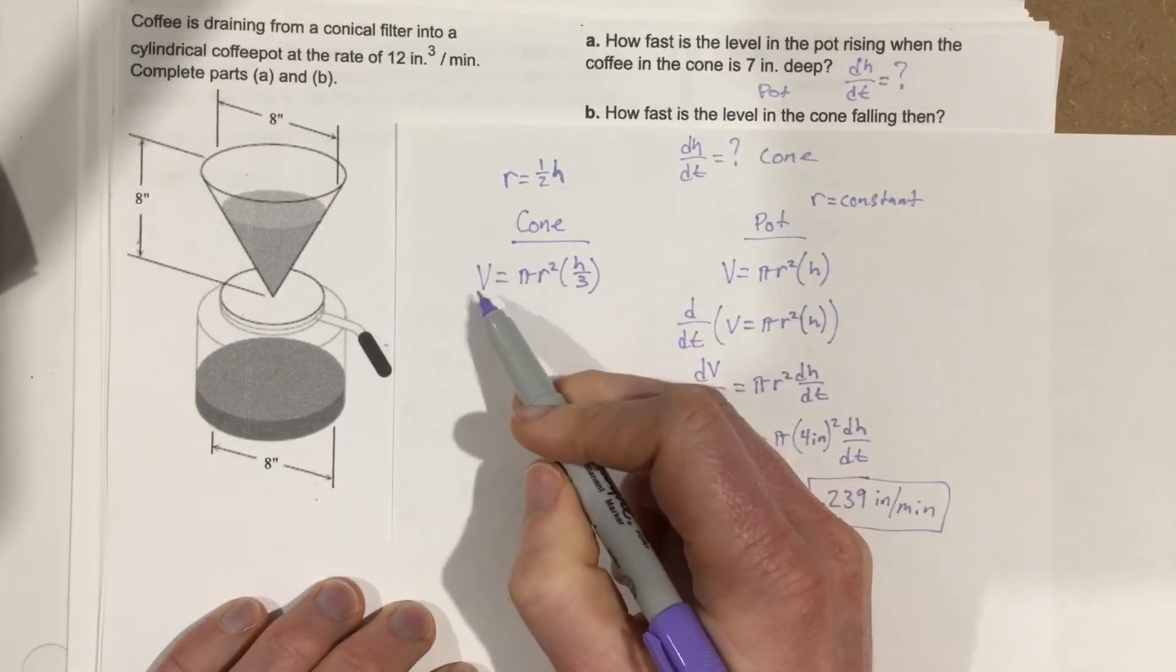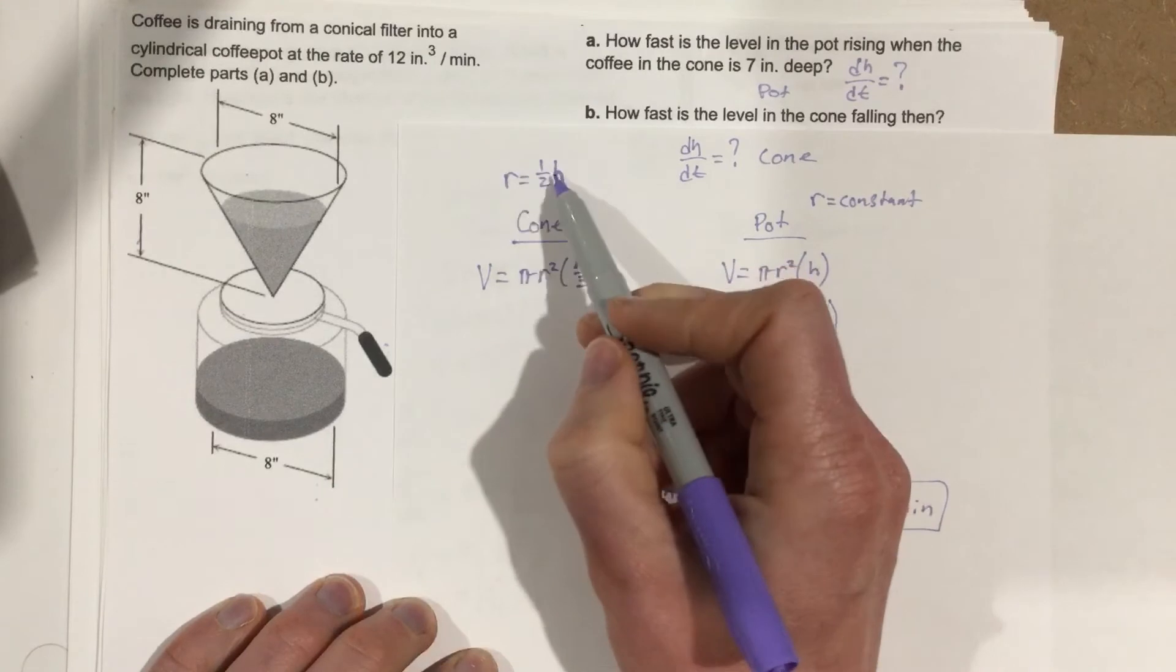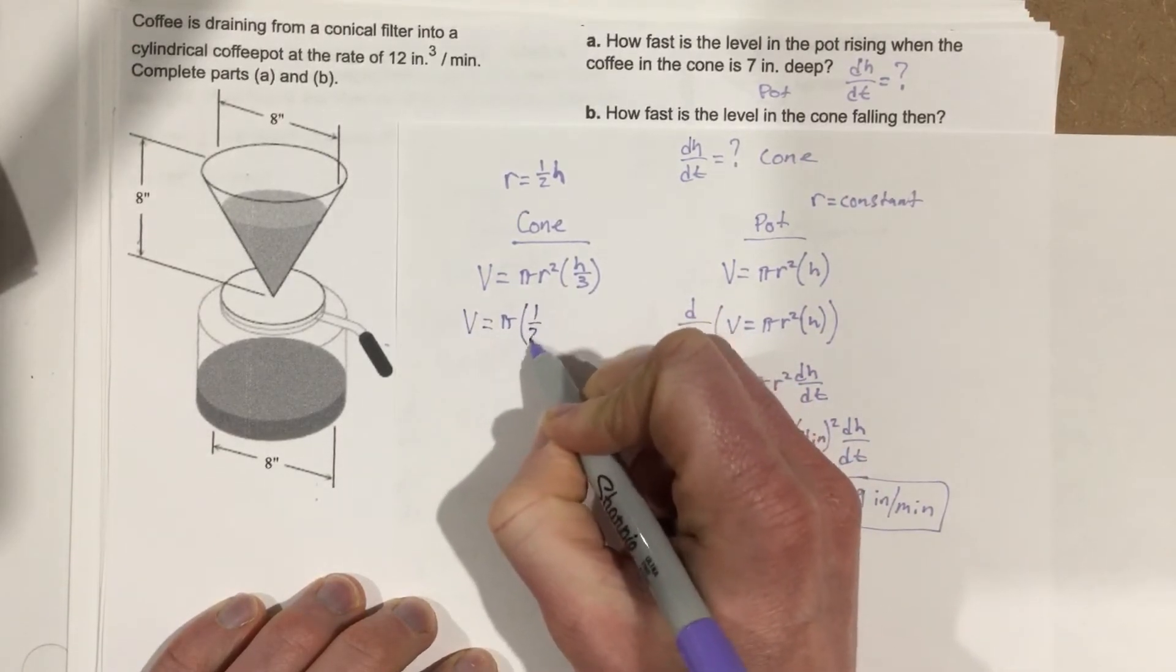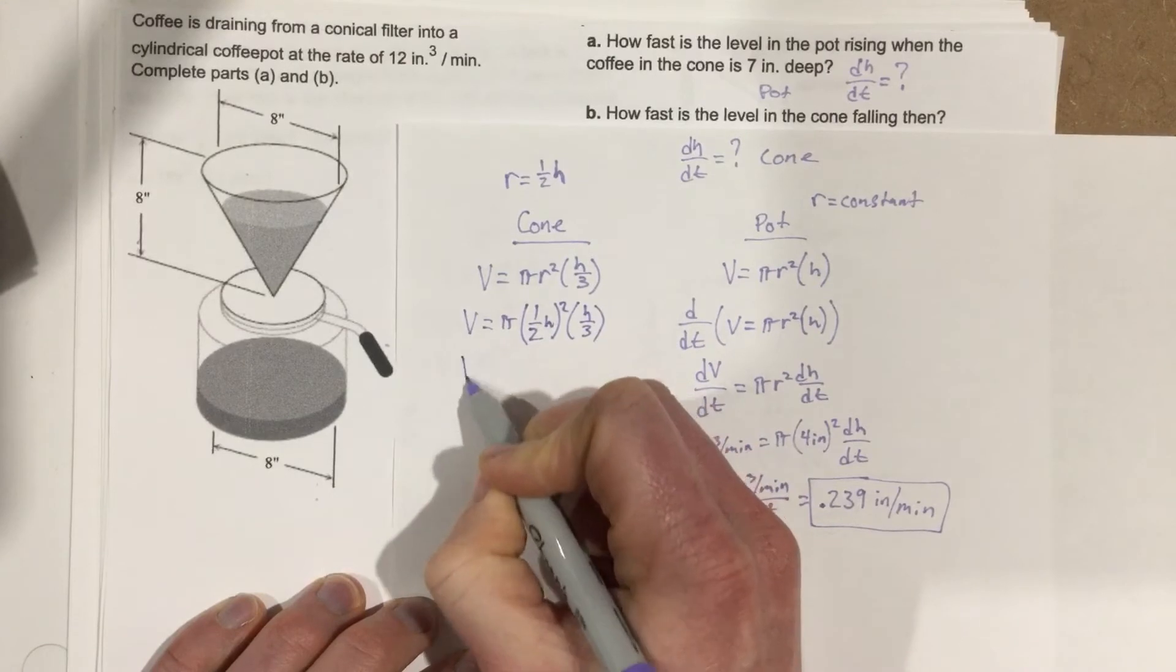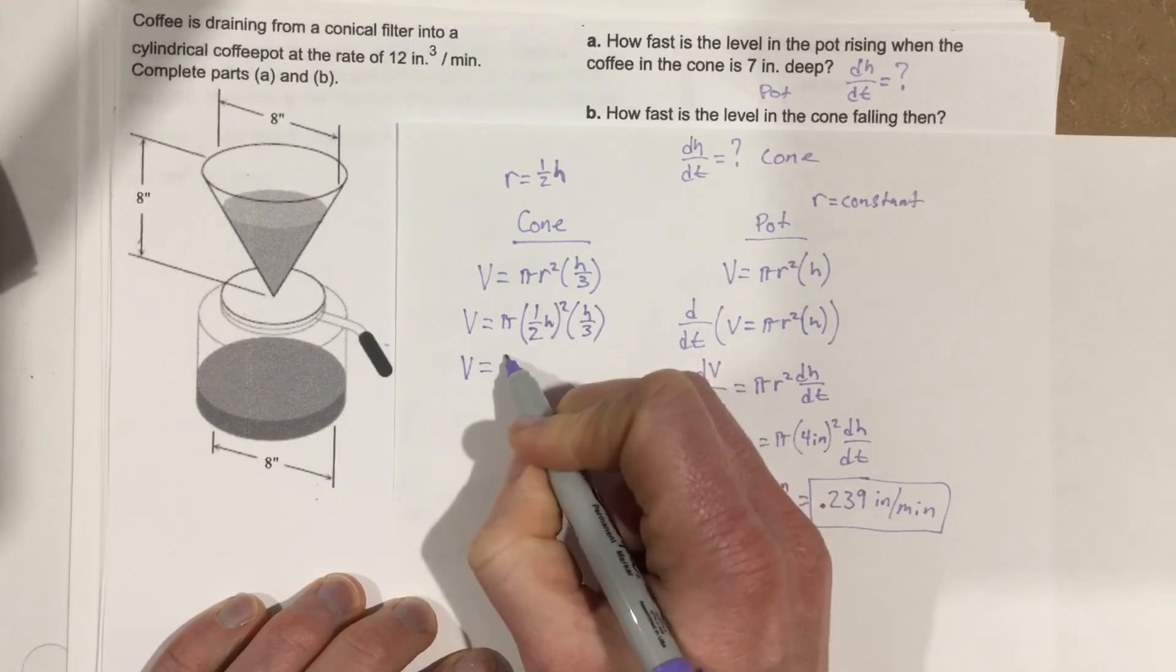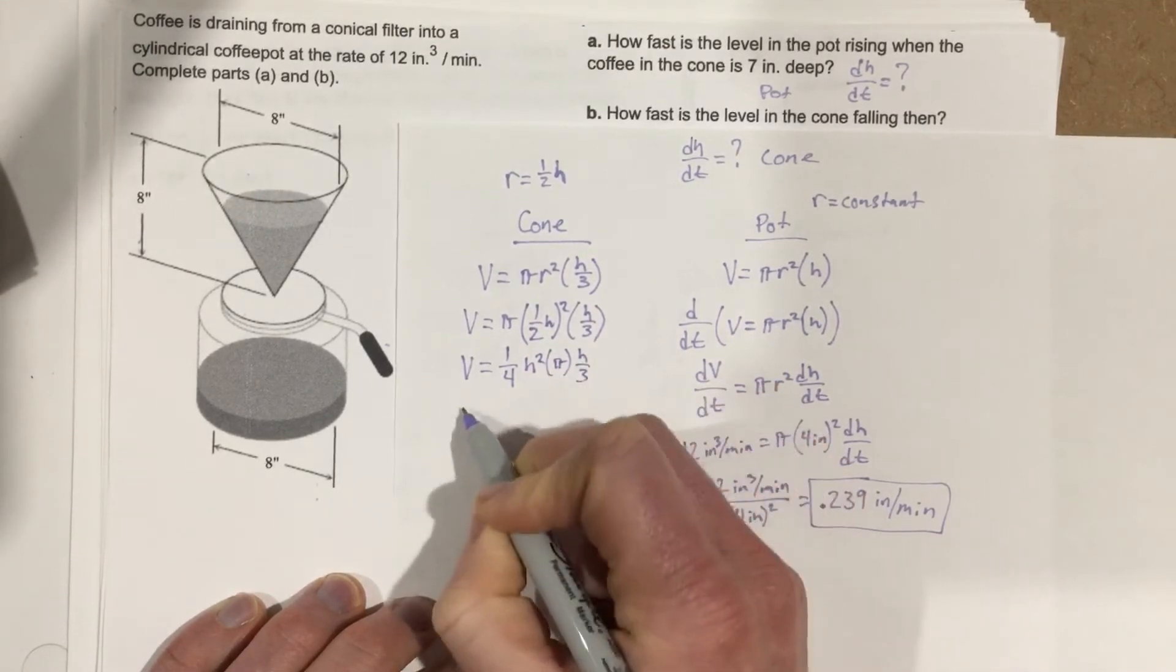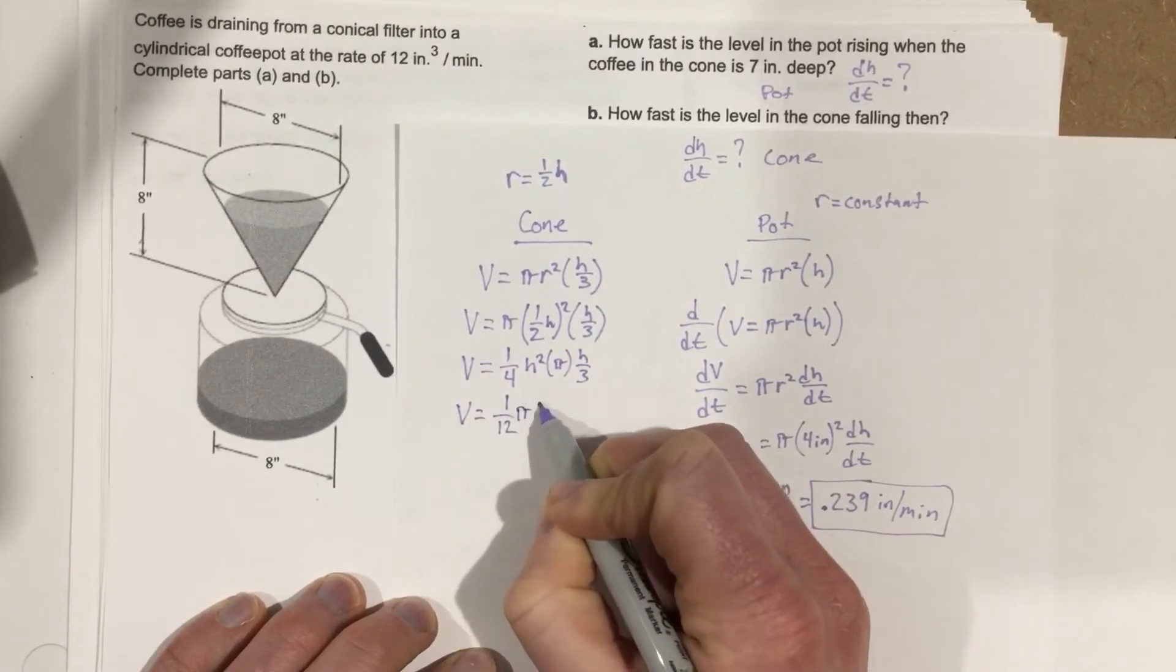Now for the cone, the volume is actually going to be negative - the same volume but we're using a negative number. First, since r = h/2, I'll plug that in to get V = π(h/2)²h/3, which becomes V = (1/4)πh²·h/3. This simplifies to V = (π/12)h³.